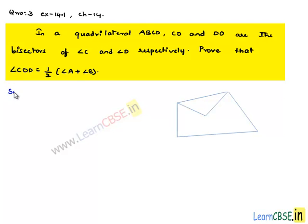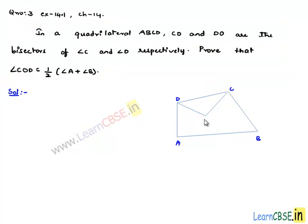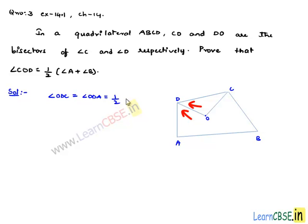Moving on to the solution. Let us consider the quadrilateral ABCD, where CO is the bisector of angle C and DO is the bisector of angle D. O is the common point of intersection of both bisectors. Since DO is the bisector of angle D, angle ODC equals half times angle D. Similarly, since CO is the bisector of angle C, angle OCD equals half times angle C.